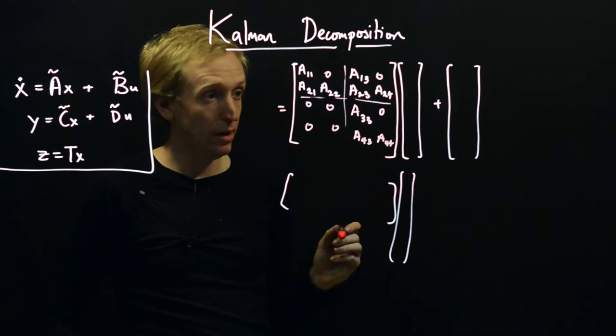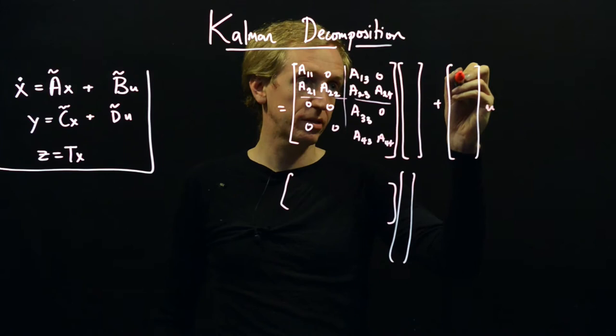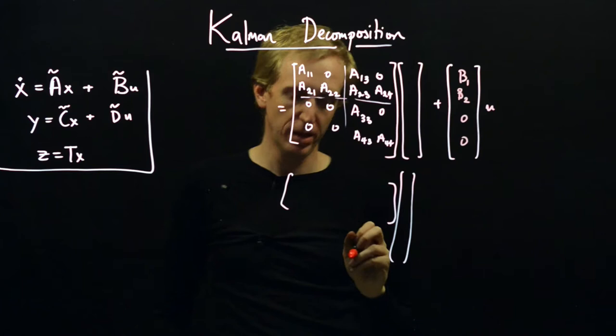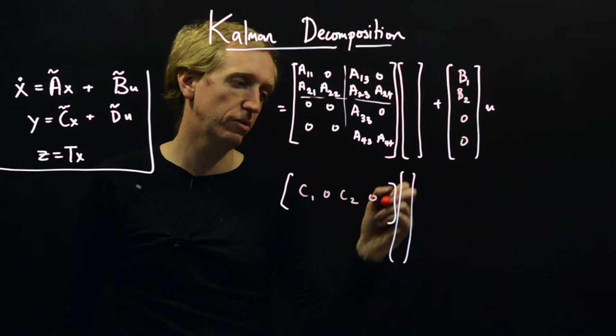The B matrix is split as B1, B2, 0, 0 and our C matrix is split as C1, 0, C2, 0, and here we have our system state Z.